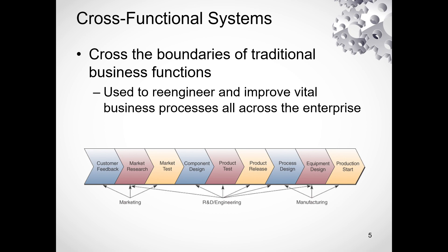Cross-functional systems cross the boundaries of traditional business functions and are used to re-engineer and improve vital business processes all across the enterprise. Cross-functional systems integrate traditional functional activities such as marketing, R&D, and manufacturing, re-integrating work to improve vital business processes enterprise-wide.